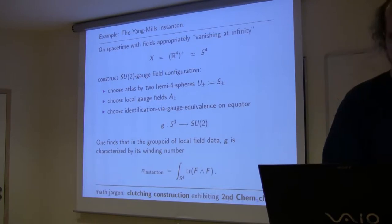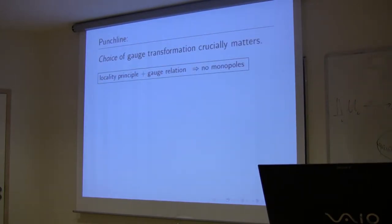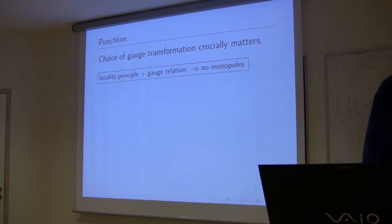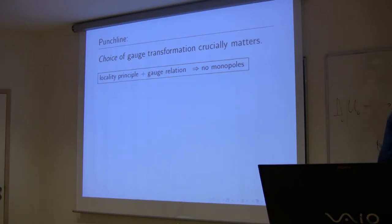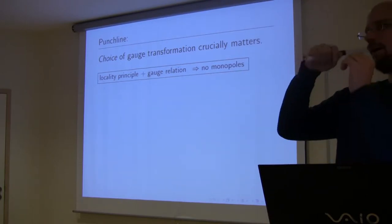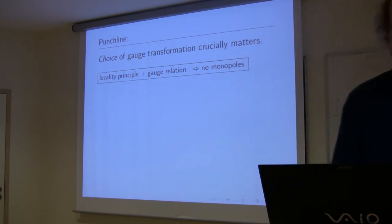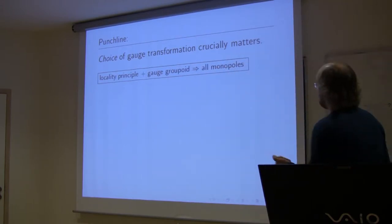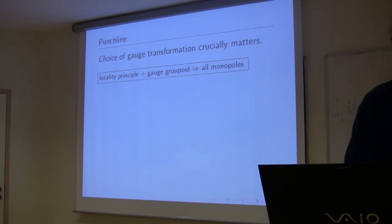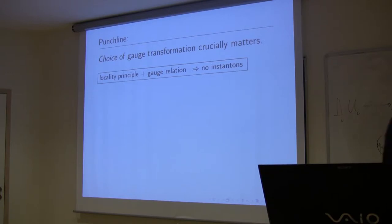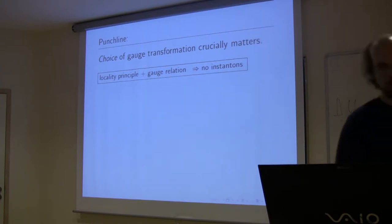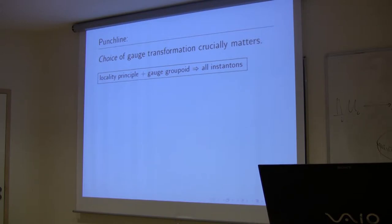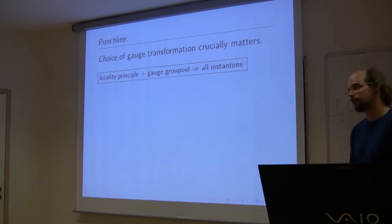The choice of gauge transformation crucially matters. If you combine the gauge principle with just gauge relations — forgetting the choices of gauge transformations — there will be no monopoles: the winding number for trivial gauge relations is zero. Whereas if you consider the full gauge groupoid with the locality principle, you get all magnetic monopole configurations. Similarly, combining the locality principle with just gauge relations for SU(2) weak nuclear force fields, you find no instanton configurations; but keeping the gauge groupoid with its full information, you find all the instanton sectors. This matters experimentally: there are instantons in nature, deduced from the standard model for baryogenesis — the reason there's more matter than antimatter comes from the chiral anomaly, whose anomaly term is precisely the instanton number.